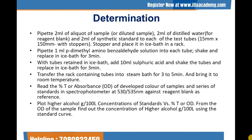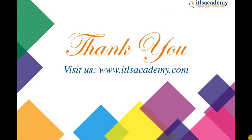Read the percent transmittance or absorbance of the developed color of samples and the series of standards in the spectrophotometer at 530–535 nm against a reagent blank as reference. Plot higher alcohol concentration in grams per litre of standards versus percent T or OD. From the OD of the sample, find the concentration of higher alcohol in grams per 100 litres using the standard curve. Thank you for being with us. For more information, please log on to our website www.itlsacademy.com.